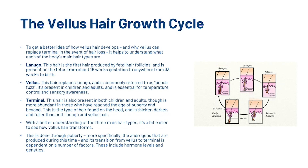With a better understanding of the three main types, it's easier to see how vellus hair transforms. This is done through puberty — more specifically the androgens produced during this time — and the transition from vellus to terminal is dependent on a number of factors, including hormone levels and genetics. So can vellus hair become terminal?